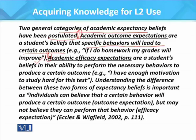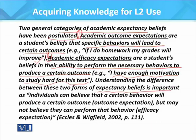The second is academic efficacy expectations, which are students' belief in their ability to perform the necessary behaviour to produce a certain outcome — for example, 'I have enough motivation to study hard for this test.' Academic efficacy expectations are basically the ability to perform the necessary behaviour to produce a certain outcome — one's conviction of having the ability to perform a certain behaviour which will lead to a certain outcome.